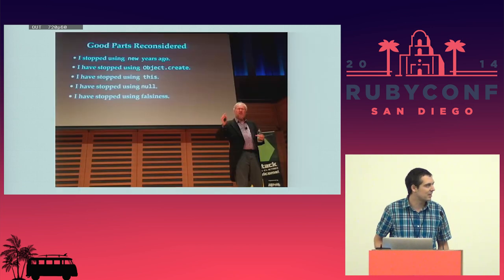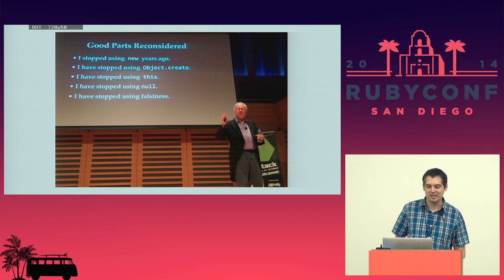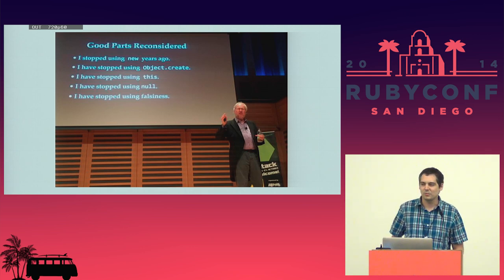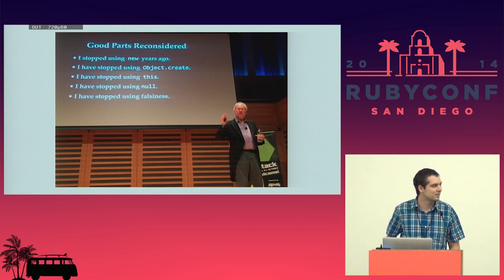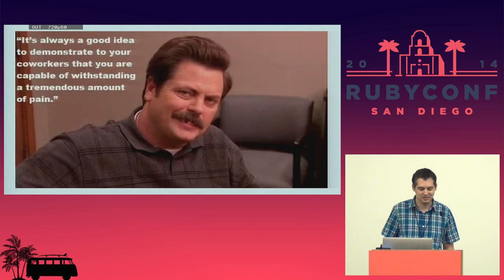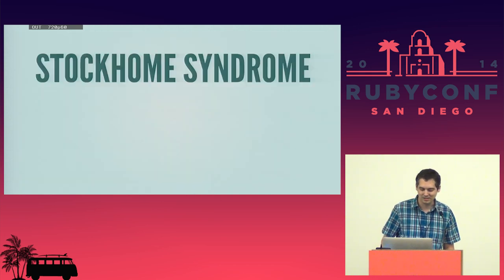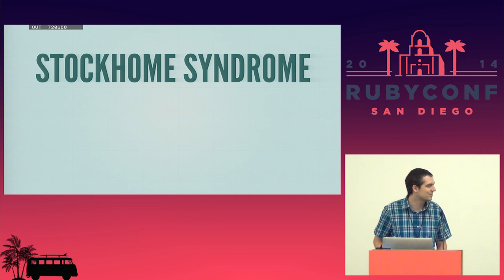Douglas Crockford — one of the big names in the JavaScript community who wrote the Good Parts book — said: 'I stopped using new, I stopped using object.create, I stopped using this, I stopped using null, I stopped using falsiness.' Part of me wonders what his code looks like at this point, and if there are so many fundamentally broken things about this language, why are we using it? I've written JavaScript for years and do like it — but someone experimenting with Opal said online: 'Every time I expected to find an issue, nothing happened. Maybe it'll be time to retire CoffeeScript soon.' We're used to dealing with JavaScript's warts by hand, so we assume compiling will add those problems plus compilation complexity.